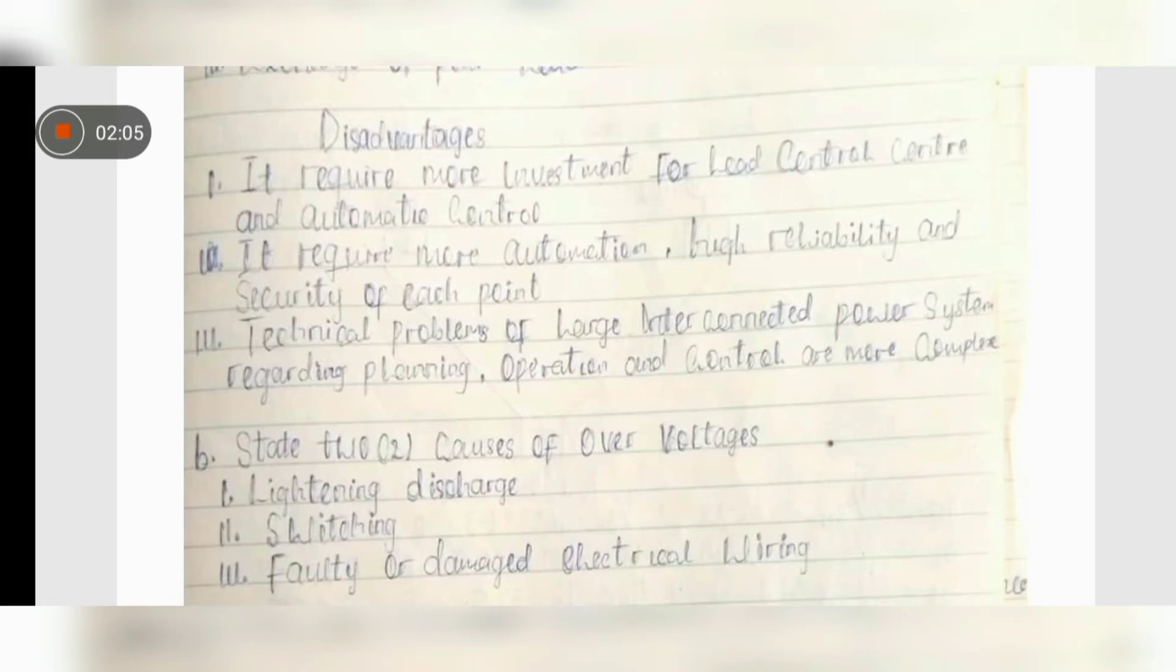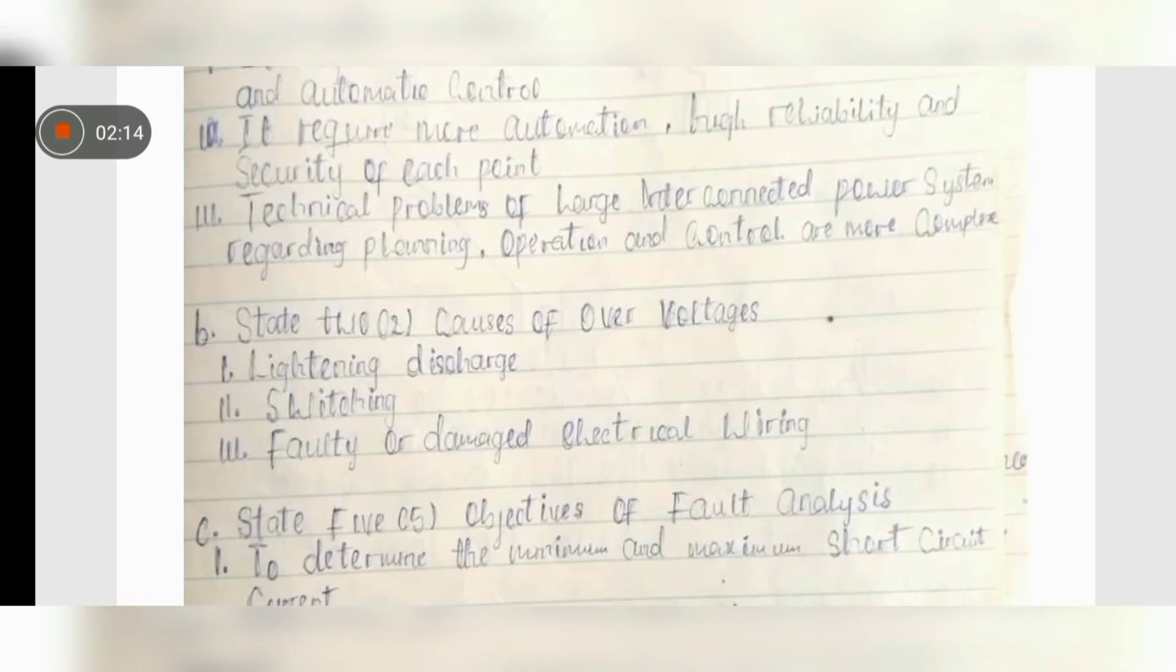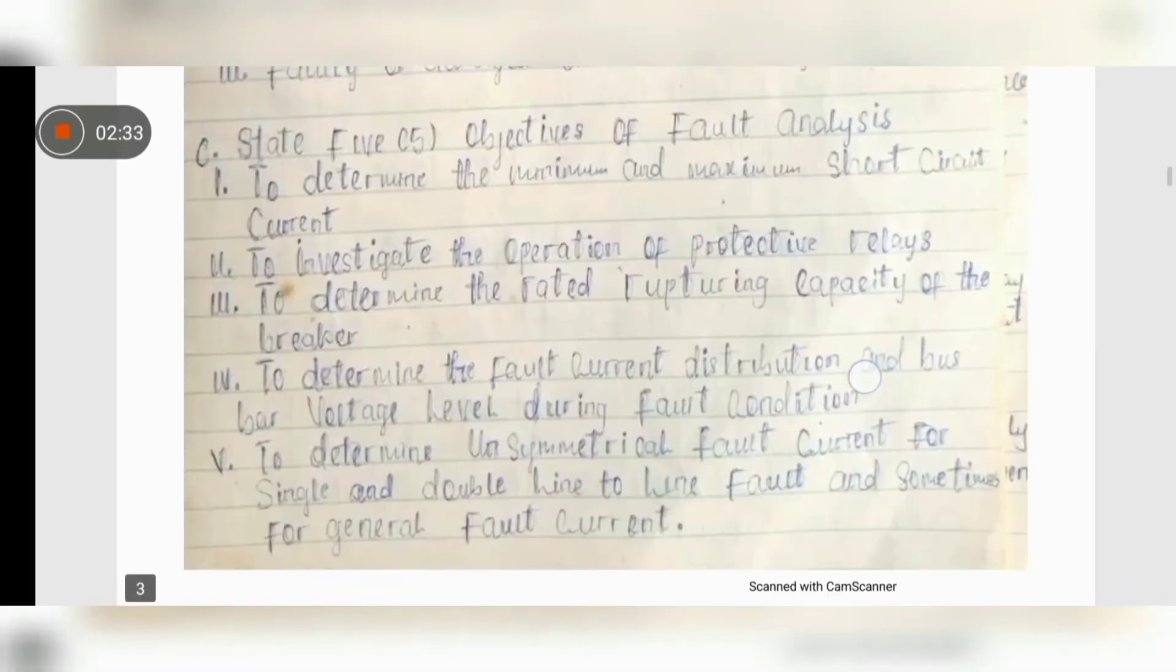What you just need to do is wait like three or more times for like three days. Like me, when I was in school, what I would practice is that I study every day. So it helped me very well as I got my distinction. So state two causes of overvoltage. There is lightning discharge, switching, faulty or damaged electrical wiring.